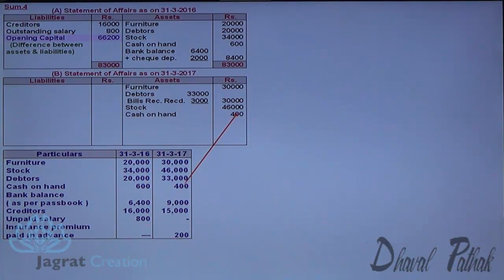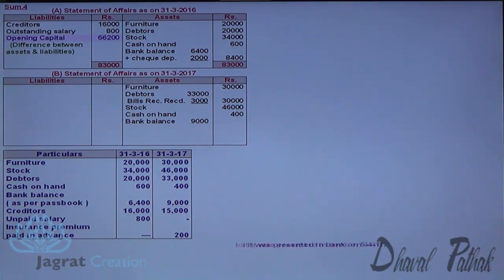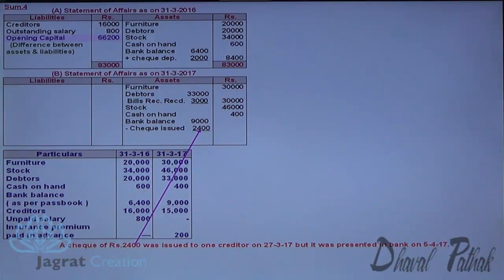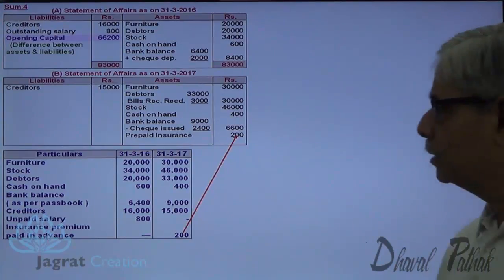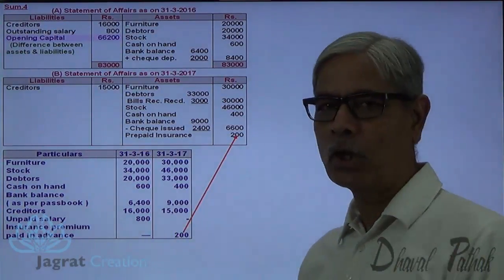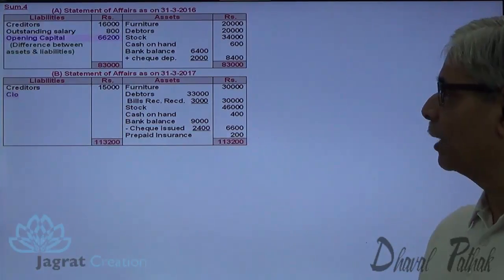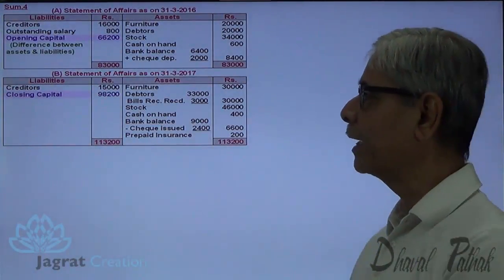Then comes cash on hand. From the balance as per passbook it has to be converted into a balance from the viewpoint of the trader by taking into consideration the cheque issued but not presented for payment — 2,400 is deducted — so 6,600 will appear in the statement of affairs. Then comes creditors, prepaid insurance. Total assets minus total liabilities gives the closing capital.